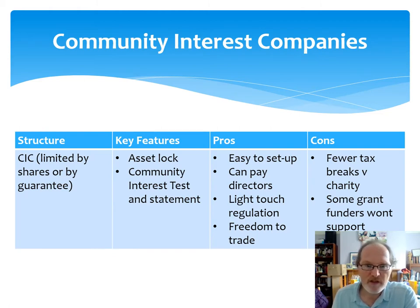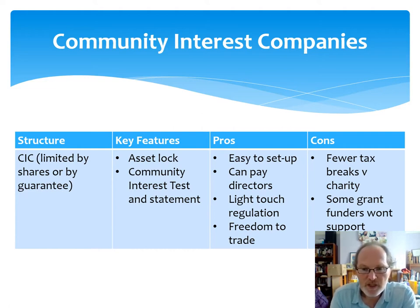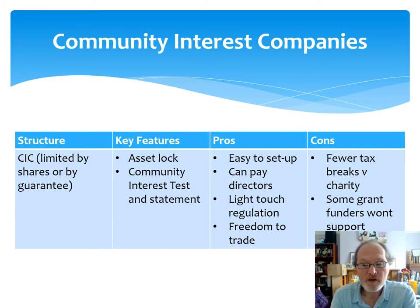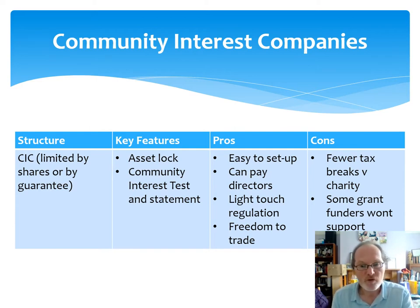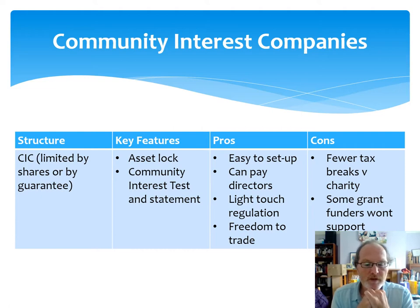The community interest company model is a company — an incorporated body — and you register it with Companies House. There are two main structures: one is limited by shares, where shareholders own the business and voting rights are allocated according to that shareholding; or limited by guarantee, where the owners of the business guarantee a notional sum against the liabilities if the company was to wind up. Within that there are a large membership model where lots of people elect a board of directors, or a small membership model where you have a core group of people starting the business. The limited by guarantee small group is the most common of all.